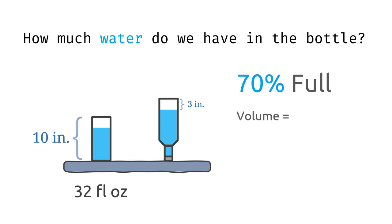Thus, the volume of the water in the bottle is 32 times 70%, which gives 22.4 fluid ounces.